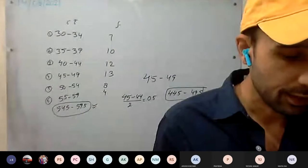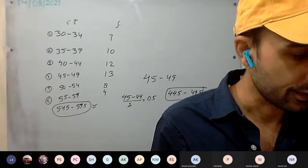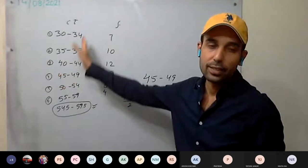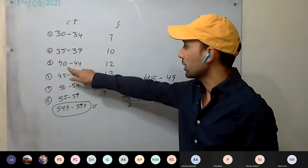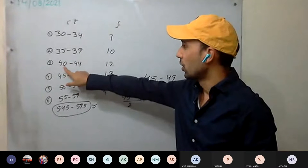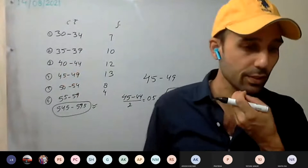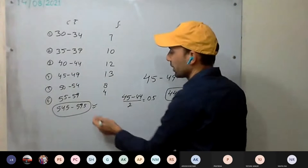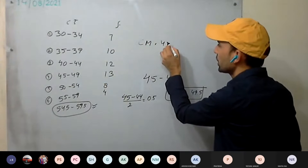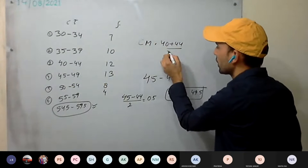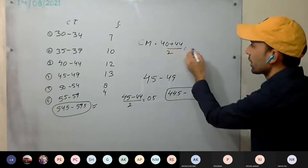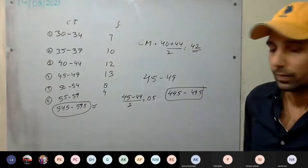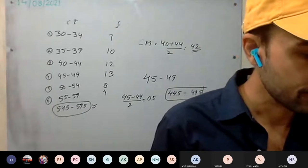Next, find the class mark of the third class. The class mark does not change whether the interval is inclusive or exclusive — it is the middle value. The third class is 40 to 44. So the class mark is (40 + 44) divided by 2, which equals 84 divided by 2, which equals 42.